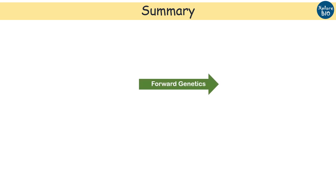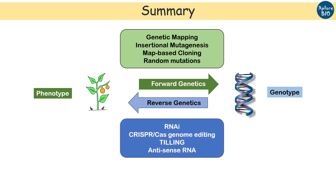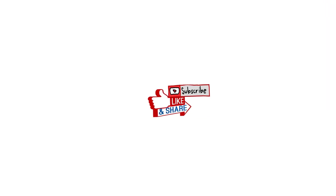Here is a quick summary of what we have learnt today. In forward genetics, we go from phenotype to genotype using approaches like genetic mapping, insertional mutagenesis, and map-based cloning, and this is based on random mutations. In reverse genetics, we go from genotype to phenotype using approaches like RNAi, CRISPR-Cas, TILLING, and others. The aim of both approaches is to dissect the trait of interest and study the relationship between genes and phenotype.